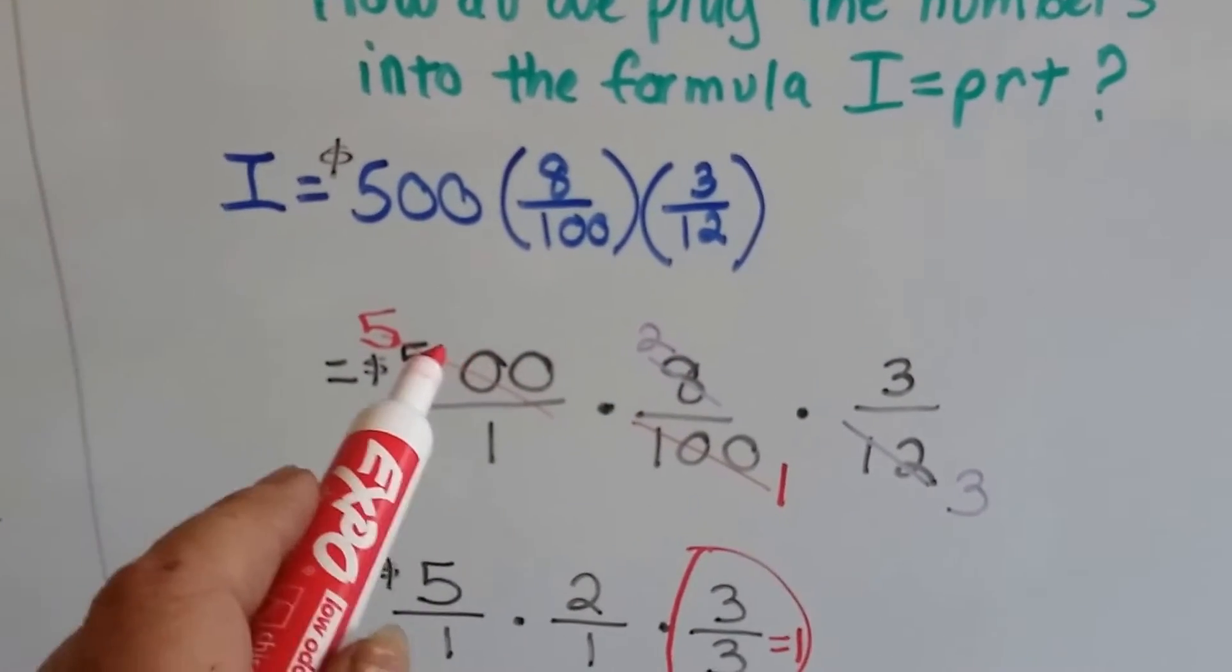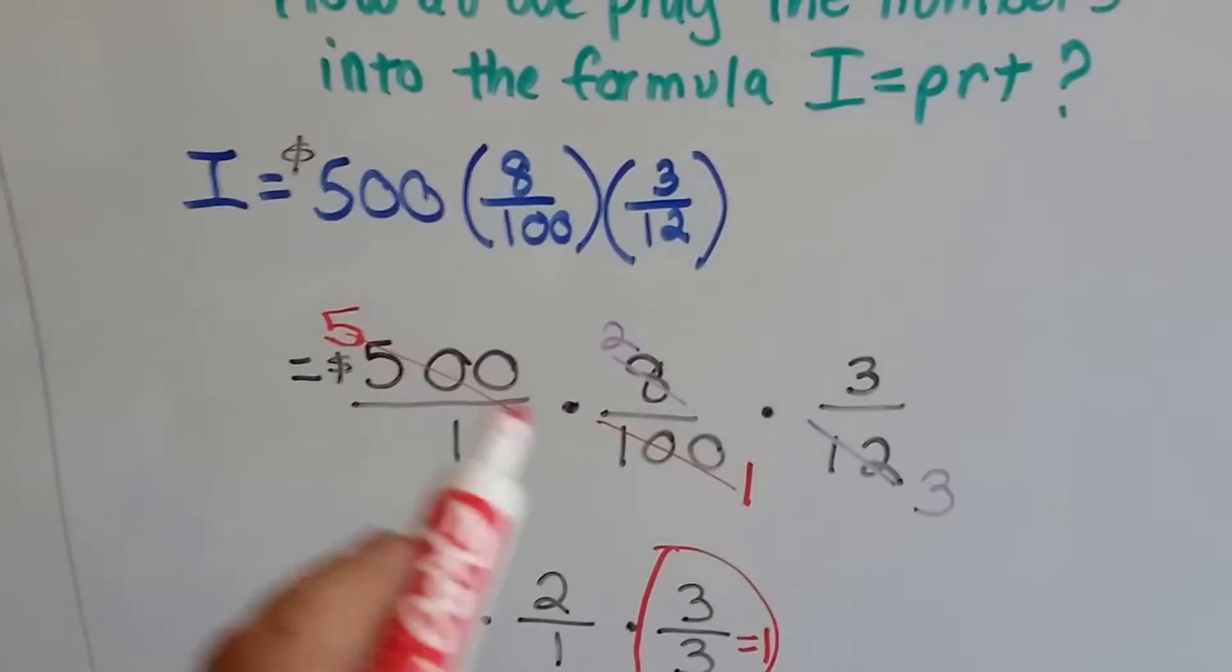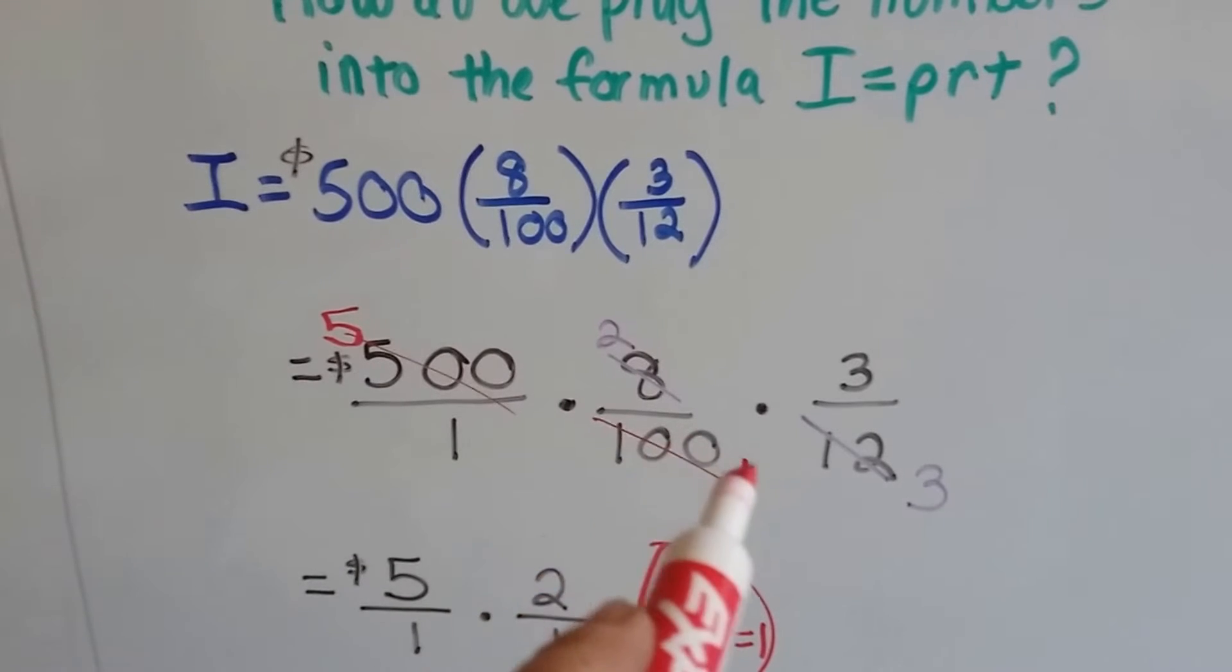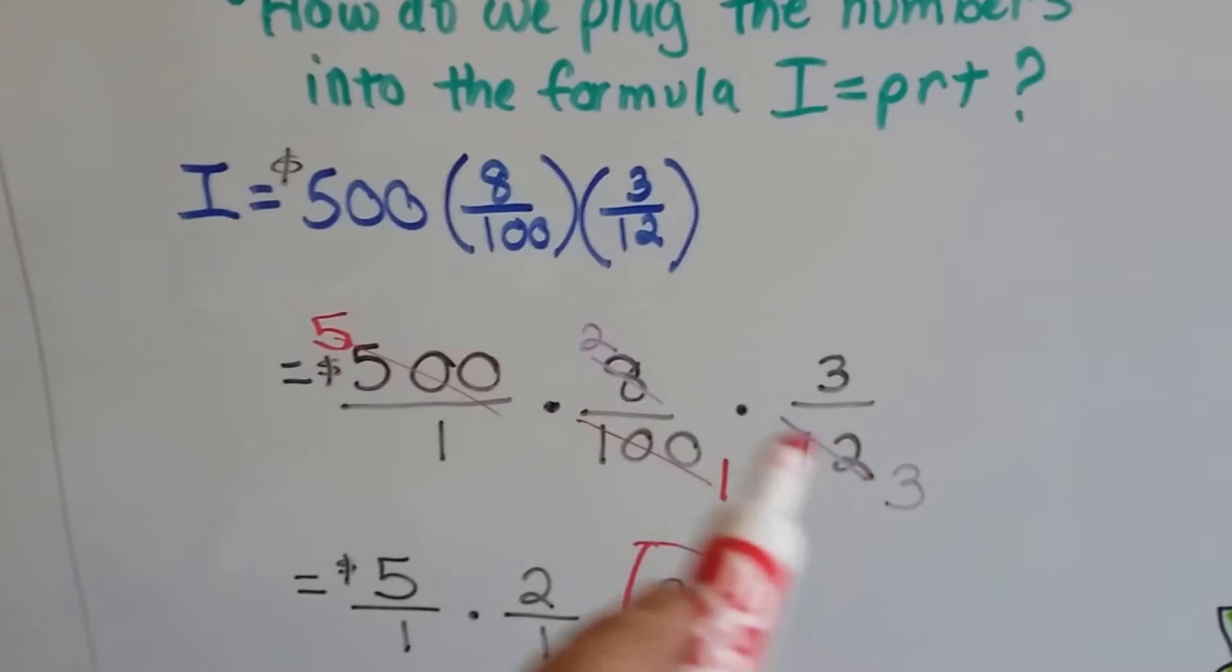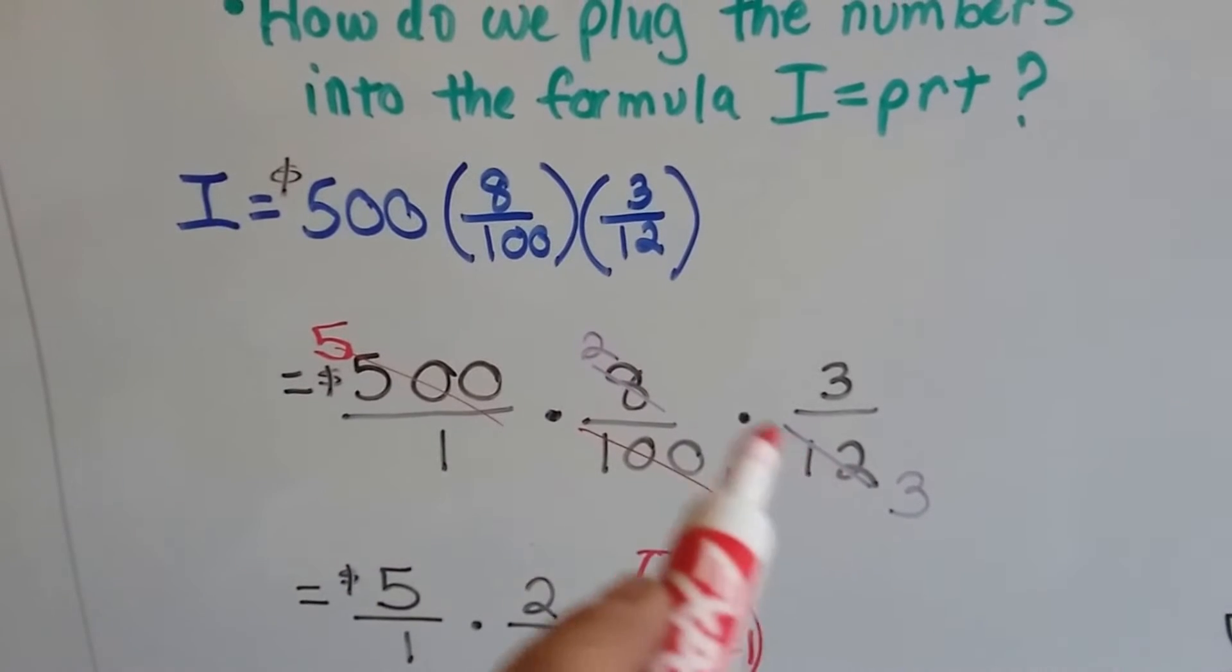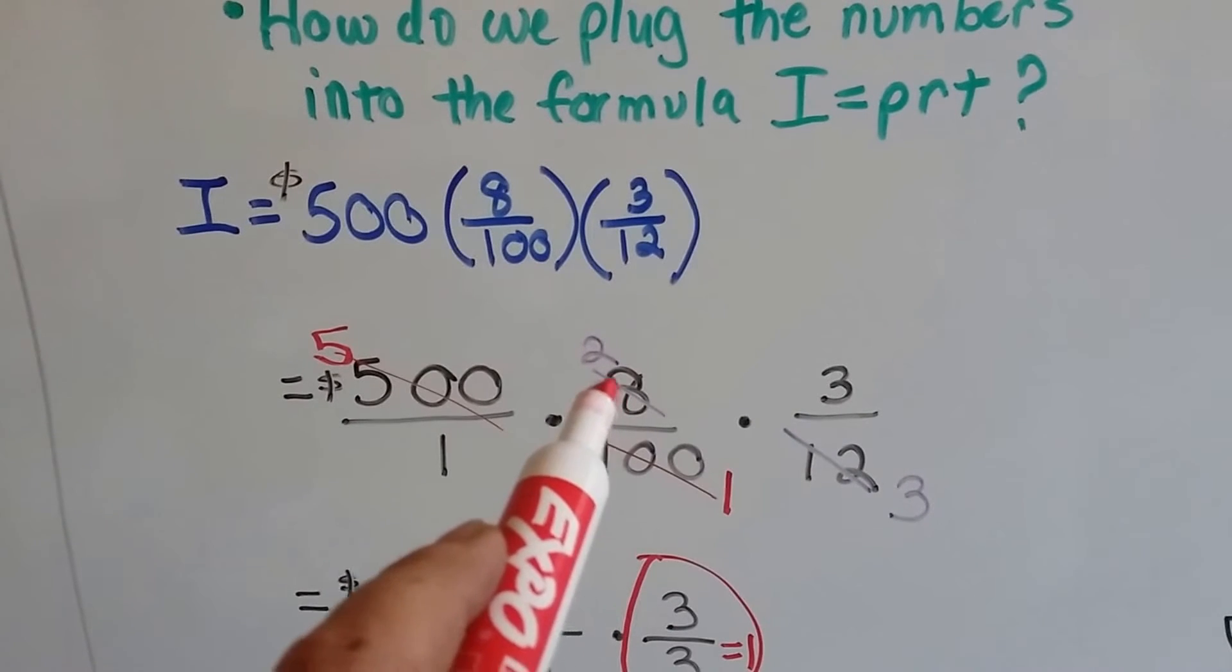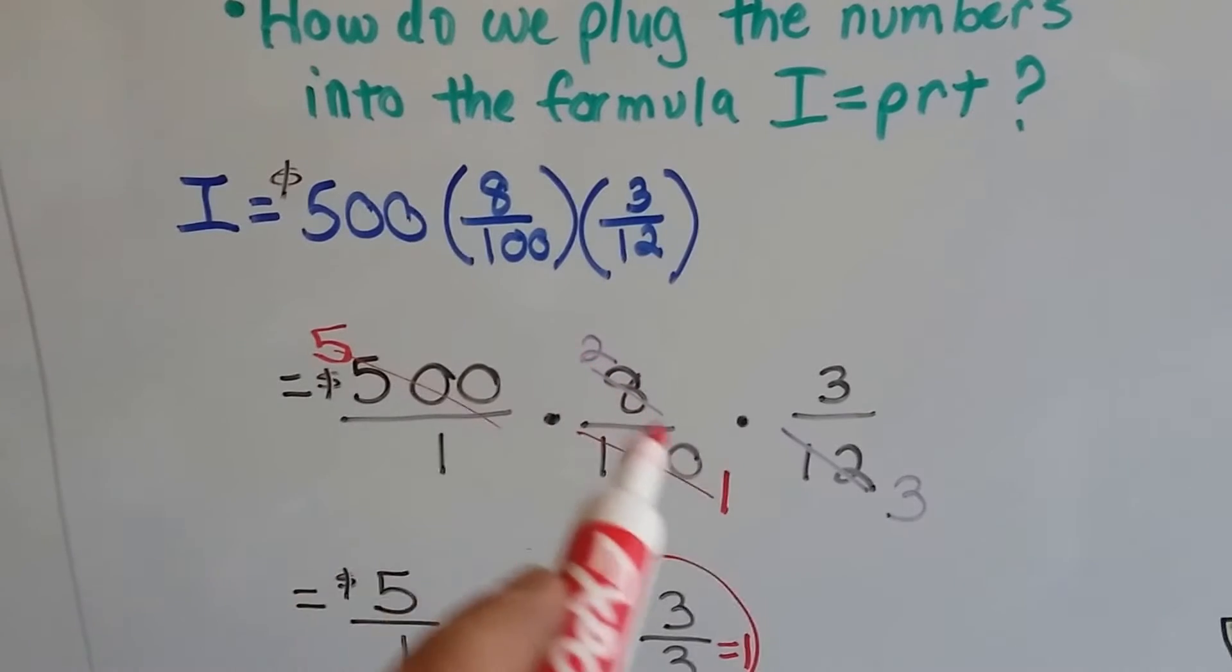Now we've got five hundred times eight over one hundred times three twelfths. We write it out like this: the five hundred and the one hundred cancel themselves out as a one and a five, and the eight and the twelve - four goes into eight and four goes into twelve. There's two fours in an eight so we put that as a two, and there's three fours in the twelve so that's a three.